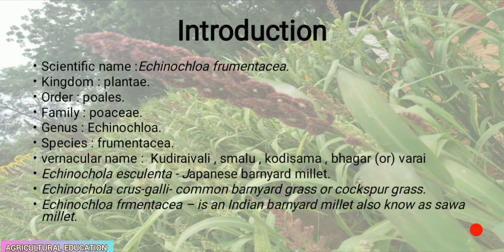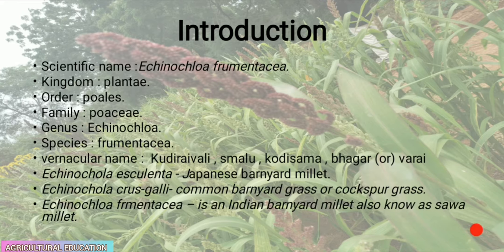The scientific name of barnyard millet is Echinochloa frumentacea. Kingdom: Plantae, Order: Poales, Family: Poaceae, Genus: Echinochloa, Species: frumentacea. Vernacular names include smalu, kodisama, bhaghar, and varai. Echinochloa esculenta is the Japanese barnyard millet, Echinochloa crus-galli is the common barnyard grass or cockspur grass, and Echinochloa frumentacea is the Indian barnyard millet, also known as sawa millet.